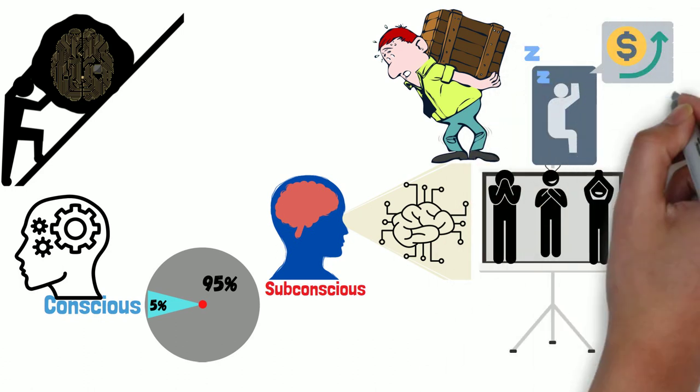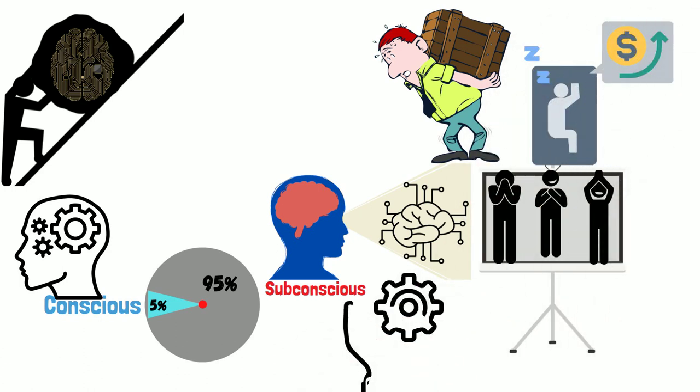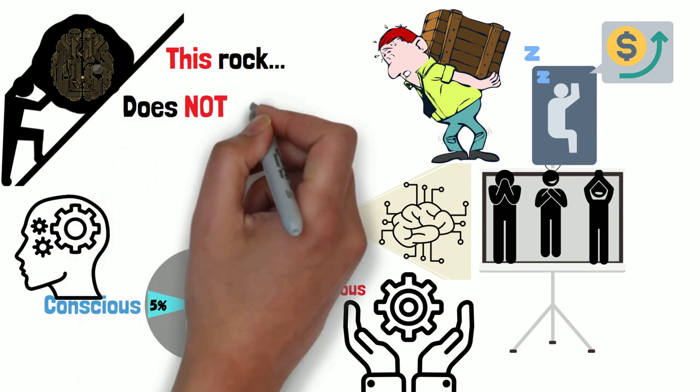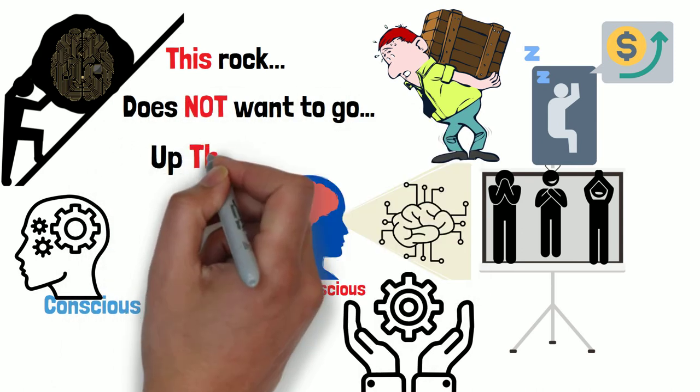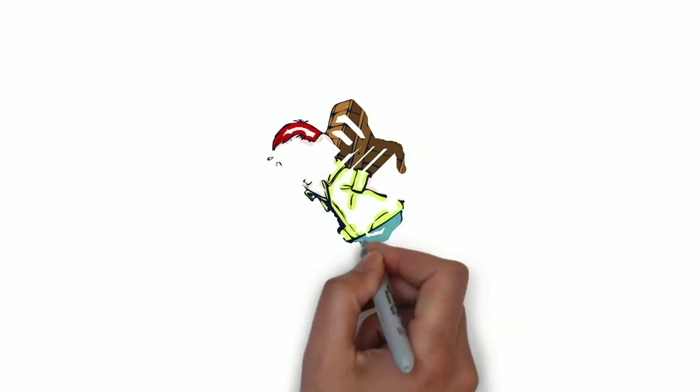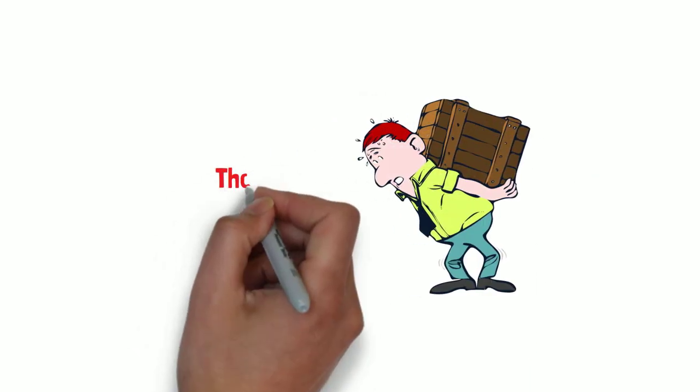So all you have to do is look at your life and say, what works for me works because I already have programs to support that. What I'm struggling with in life, I'm having a problem with because I have subconscious programs that do not encourage that behavior. So right away, you automatically know what behaviors do you want to change? They're the ones that you have difficulty with.